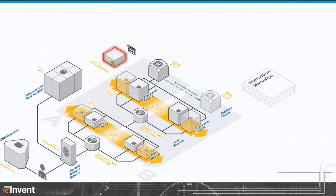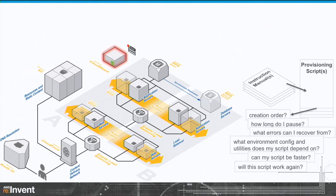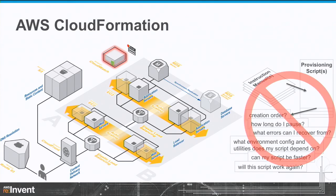There is obviously one way, which is reading lots of instruction manuals and then putting together long scripts. But if you go down that path, there are lots of questions you need to answer: What should be the creation order? Can the load balancer be created before the auto-scaling group, or should it be after? What are the provisioning errors you can recover from, and what are the errors you should not retry? How long should you wait between creation of the database and the servers? Will that script work again in the same or different environment? And if you're using CloudFormation, you do not have to worry about any of that.